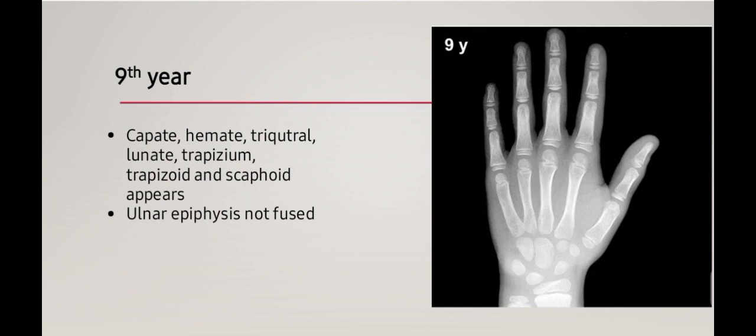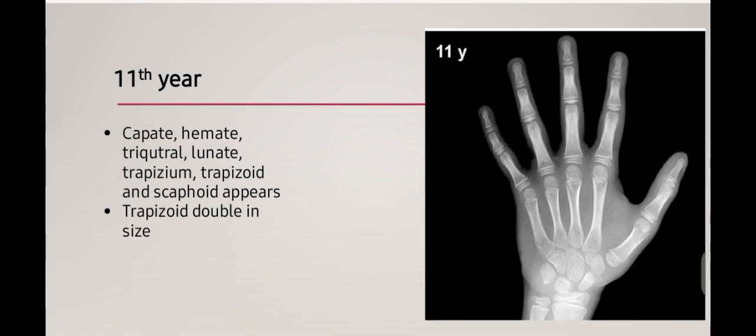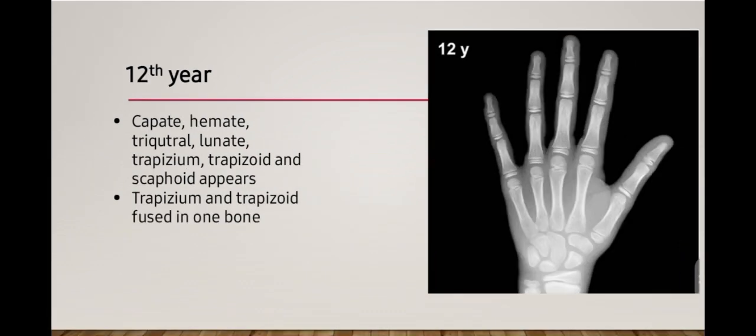At nine years, capitate, hamate, triquetral, lunate, trapezium, trapezoid, and scaphoid bones are present, and both ulnar and radial epiphyses are not yet fused. At 11 years, all the same carpal bones are present and a double outline of the trapezoid would be observed. At 12 years, trapezium and trapezoid maximally overlap each other. Hope this will be very useful to you in calculating the bone age. Assalamu alaikum.